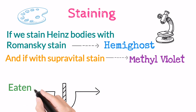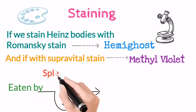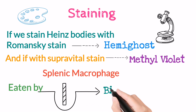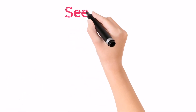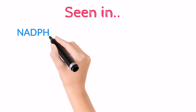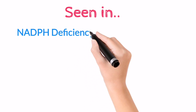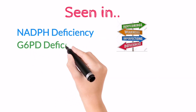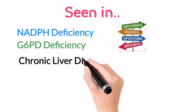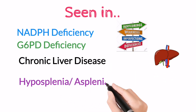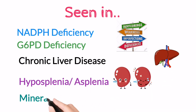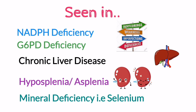Remember, Heinz bodies are eaten by the splenic macrophage, which results in the formation of the bite cell. Conditions where Heinz bodies are seen include NADPH deficiency, G6PD deficiency, chronic liver disease, hyposplenism or asplenism, and mineral deficiency like selenium.